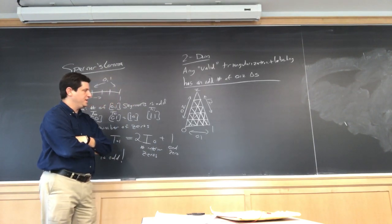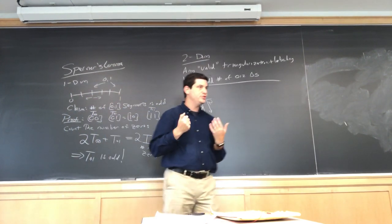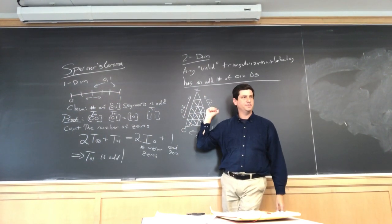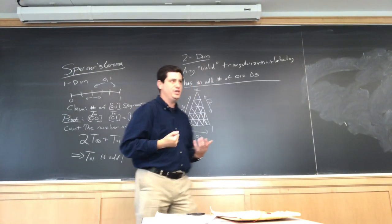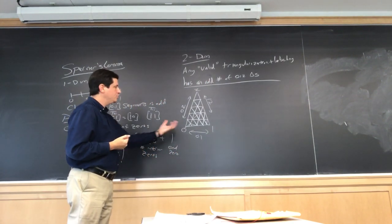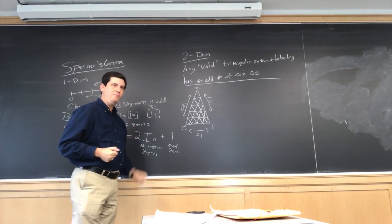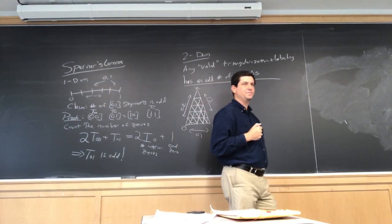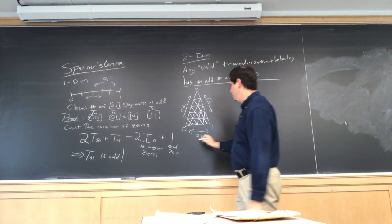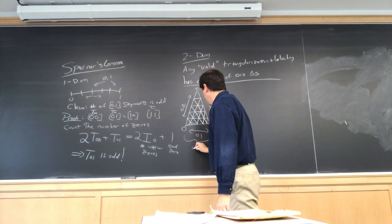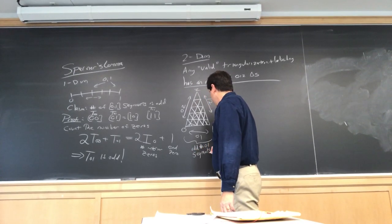And we want to prove that there has to be at least one 0, 1, 2 triangle. I'm trying to remember, when Professor Hsu lectured, did he talk about how that gives us a fixed-point theorem? So, we've already seen the motivation that there is a reason why we care so much about this. So, let's try to play the same game as before. What do we know about this triangle? Well, we know from the one-dimensional bottom it has an odd number of 0, 1 segments. So, there's an odd number of 0, 1 segments.